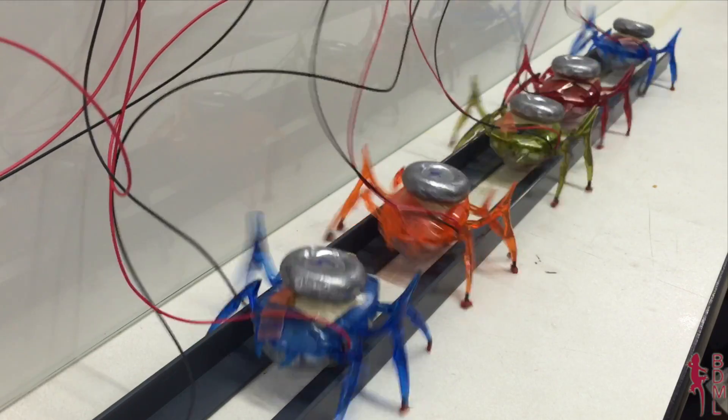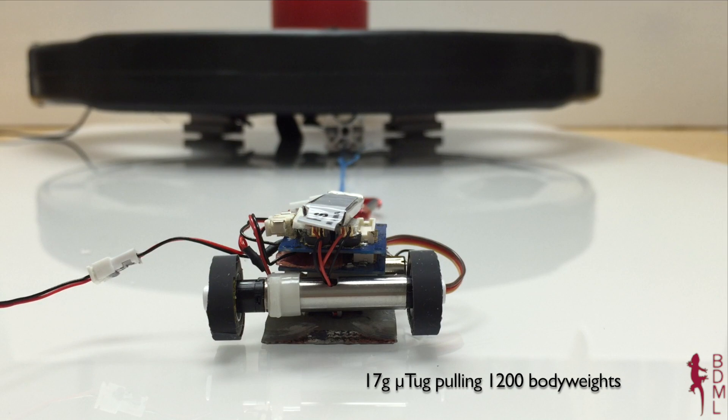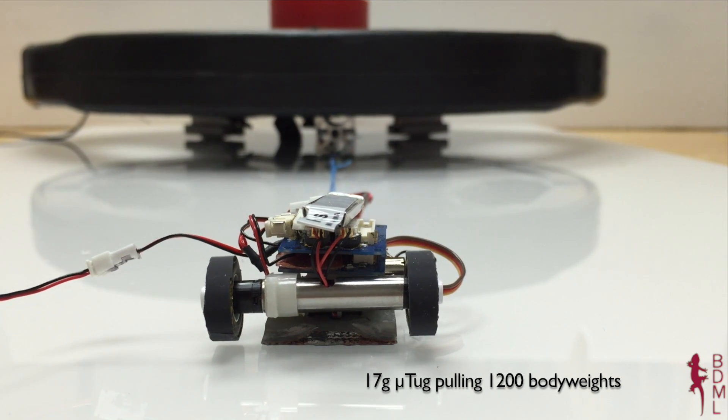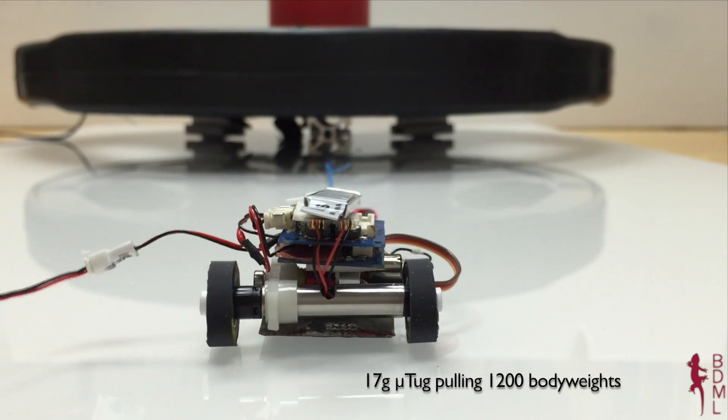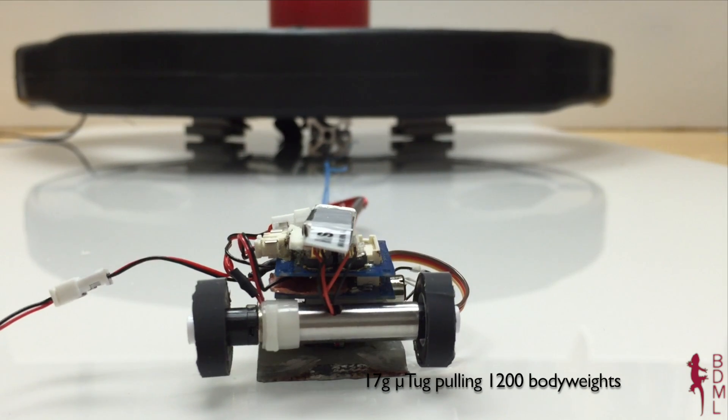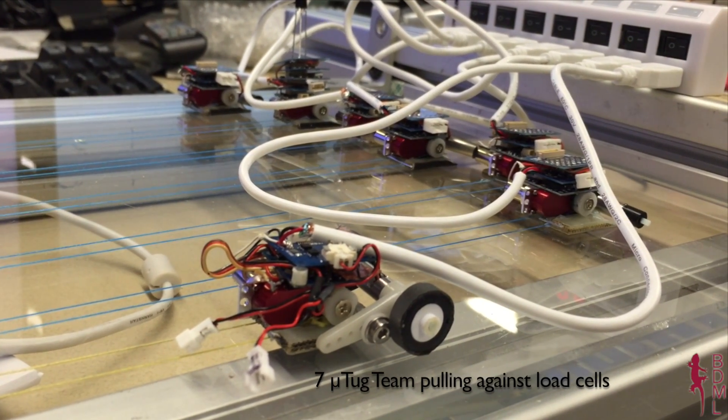After a series of experiments, we found that the best way for robots to work together as a team was to use a very long, very slow, but very steady winching gait like our team of micro-robots here.